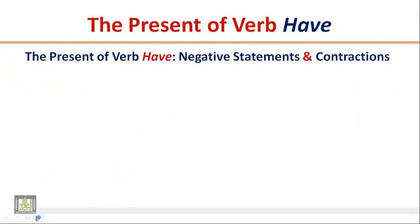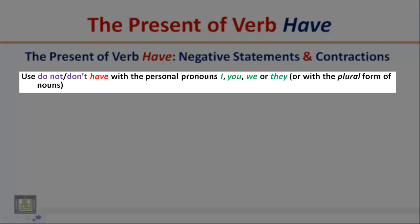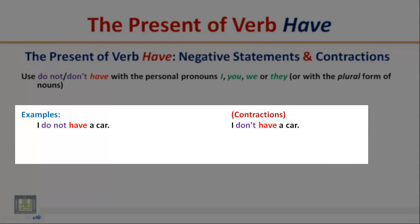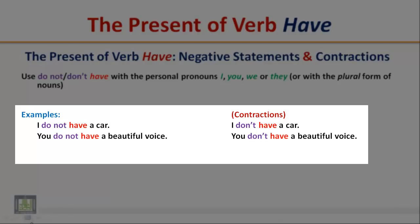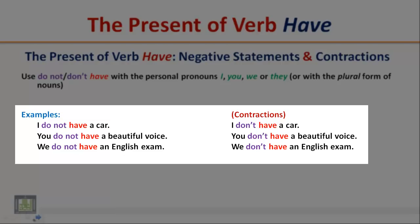The present of verb 'have' — negative statements and contractions. Use 'do not have' or 'don't have' with the personal pronouns I, you, we, or they, or with the plural form of nouns. Examples: I do not have a car / I don't have a car. You do not have a beautiful voice / You don't have a beautiful voice. We do not have an English exam / We don't have an English exam.